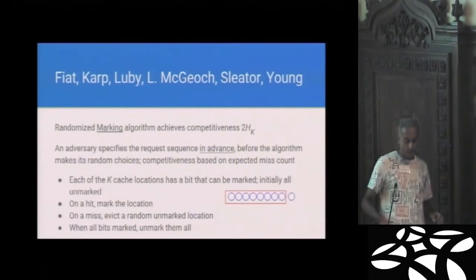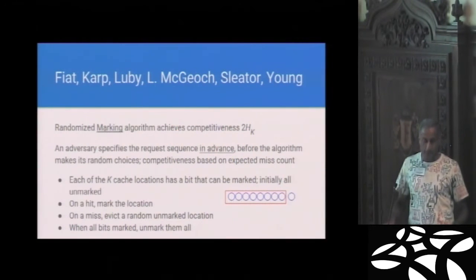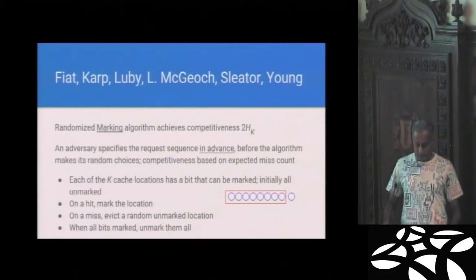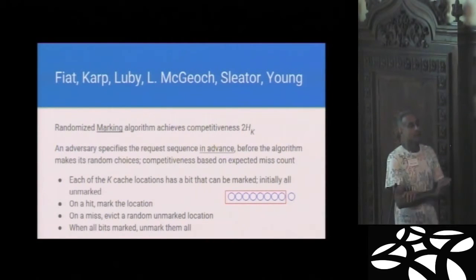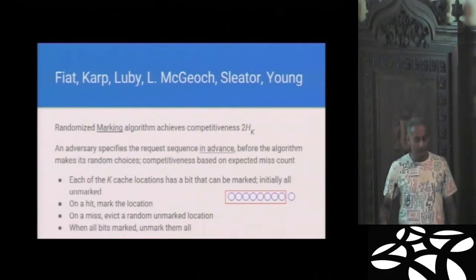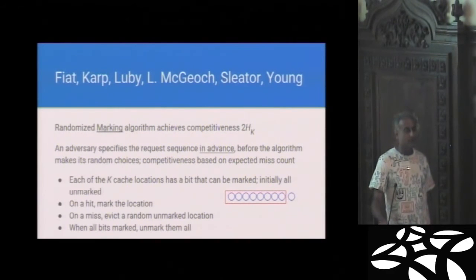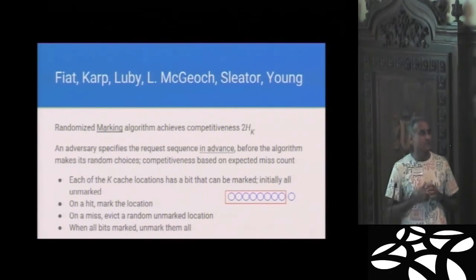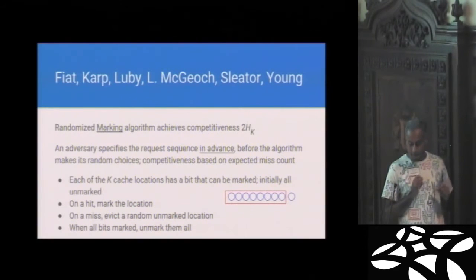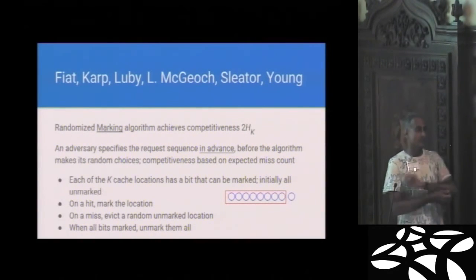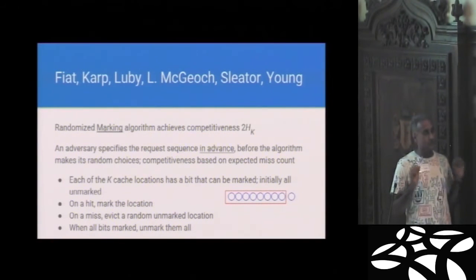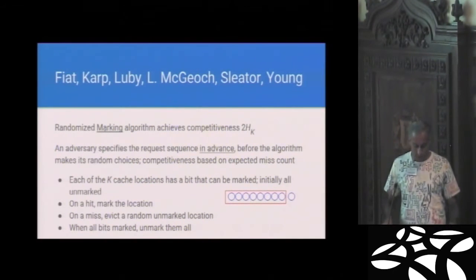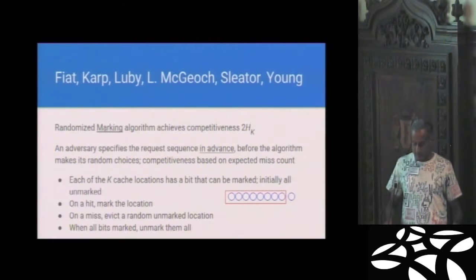So here's a nice algorithm due to Fiat, Karp, Luby, McHugh, Slater, and Young. And what they showed was an exponential improvement in the competitiveness due to randomization. They showed that the randomized marking algorithm has competitiveness something like two times the K-th harmonic number. And here's what they do. It's important to understand the setup here. Shortly before this was published, Mark Snir and I got the order of quantifications wrong. So this is the critical thing to observe. The adversary has to write down the request sequence in advance. And then the online algorithm flips coins and makes randomized choices.